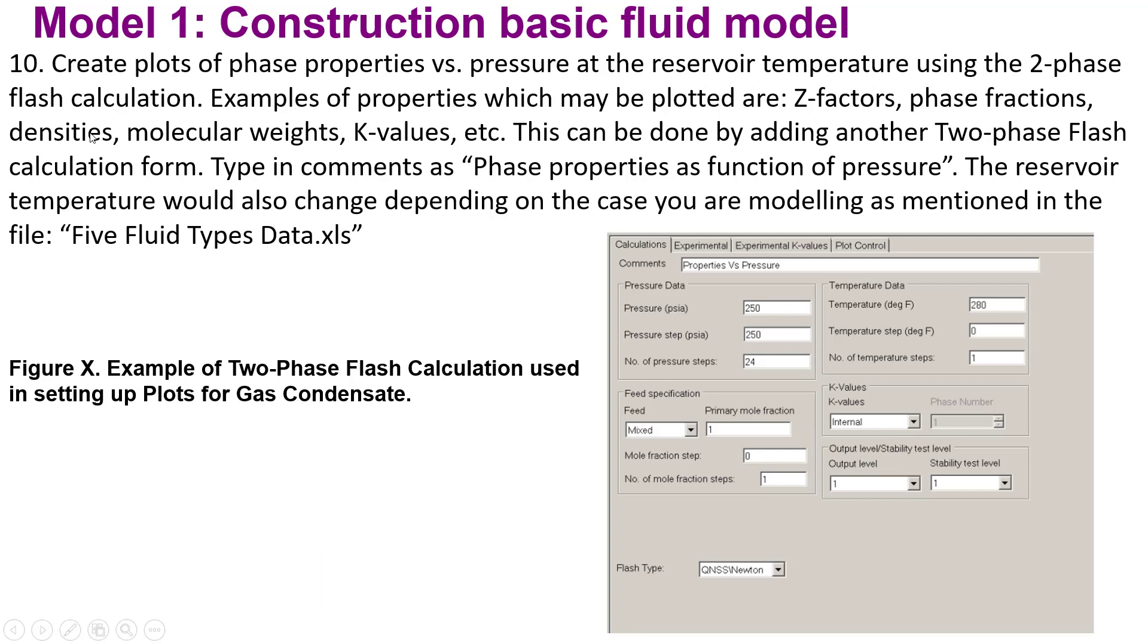Next, create plots of phase properties versus pressure at the reservoir temperature using two-phase flash calculations. Sample properties which may be plotted are Z-factors, phase fractions, densities, molecular weights, and K-values. This can be done by adding another two-phase flash calculation form. Similar to previous steps, you can fill in the comment like this: 'Phase properties as a function of pressure.' The reservoir temperature would also change depending on the case you are modeling, as mentioned in the data file.